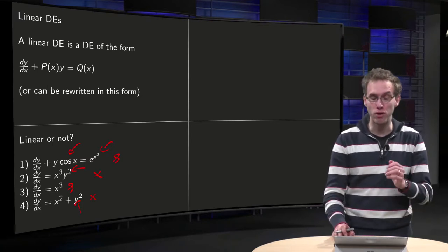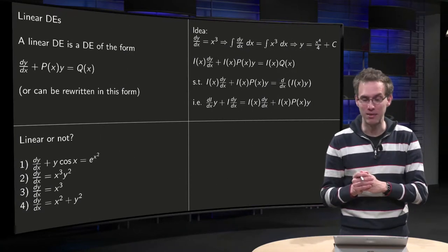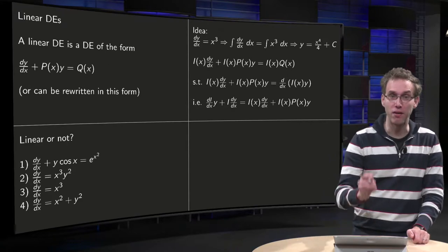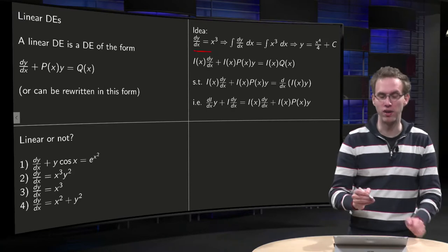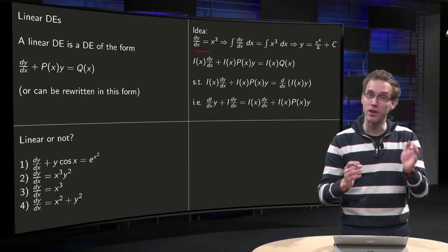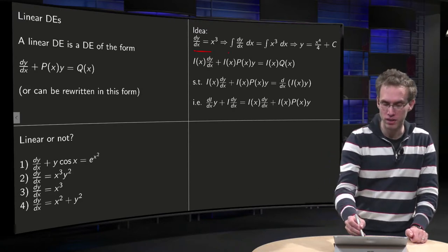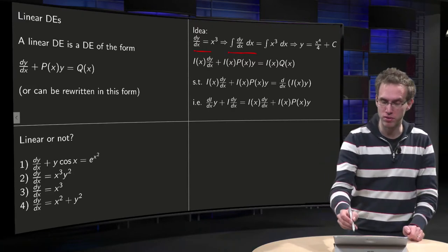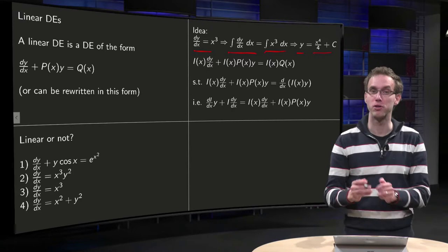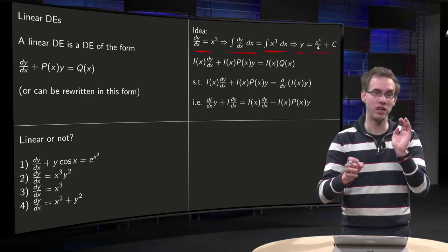So how can you solve those differential equations? We first look at the general idea, using example three where we have no p(x). In that case we have y' equals x cubed, and we can integrate on the left and on the right with respect to x. So we get y equals x to the power of 4 over 4 plus c. If we don't have a p, we can just integrate left and right.